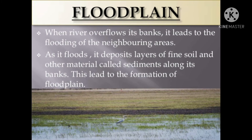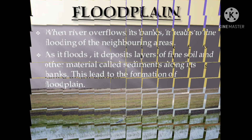Next is flood plains. When a river overflows its banks, it leads to the flooding of the neighboring areas. As it floods, it deposits layers of fine soil and other material called sediments along its banks. This leads to the formation of a flood plain.